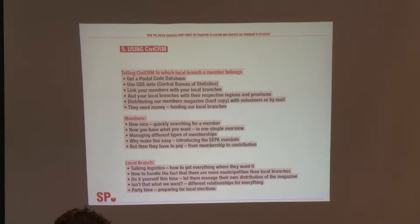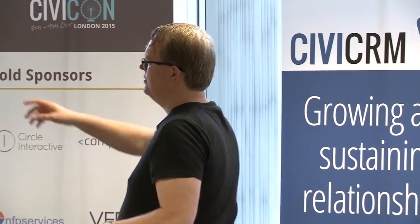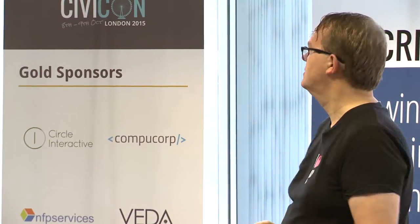How did we solve the puzzle of linking members to their local branches? We got a postal code database — so if you put in your postal code, it automatically looks up what street and town you live in. We combined that with CBS data — the Central Bureau of Statistics — which is free in the Netherlands and provides information about municipalities. Based on the postal code database and CBS data, we can determine in which municipality somebody lives, and link members to their local branches, and local branches to the respective regions and provinces.